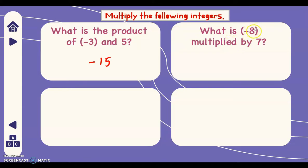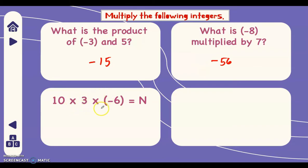Next, what is negative 8 multiplied by 7? We multiply 8 times 7 which is 56. There is only one negative integer, therefore the sign of the answer is negative. Next, we have 10 times 3 times 3 times negative 6. We multiply one by one: 10 times 3 is 30, 30 times 6 is 180. There is only one negative integer, which is odd, therefore the sign of the answer is negative.